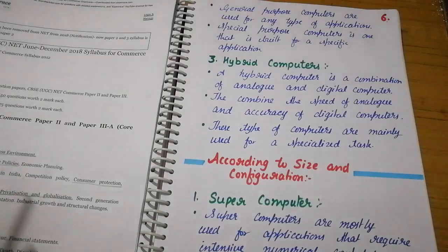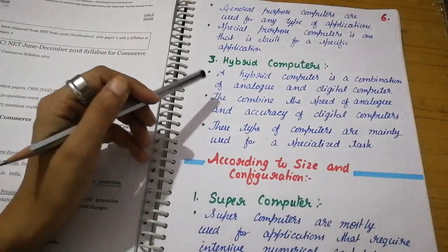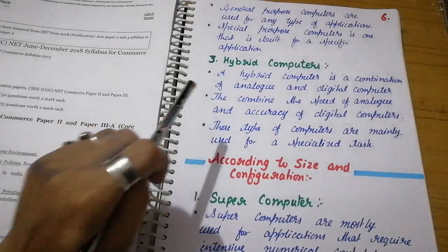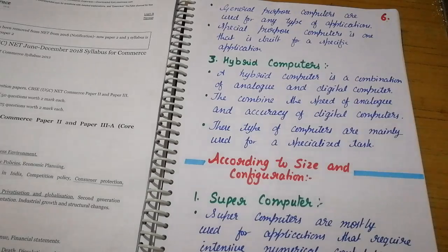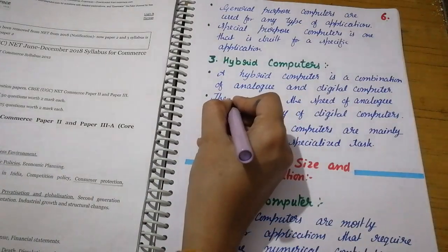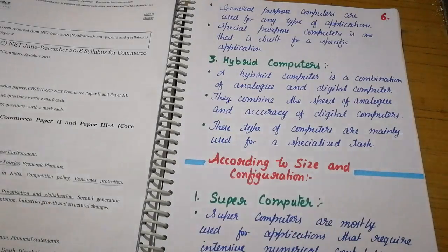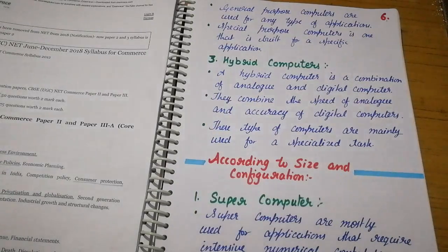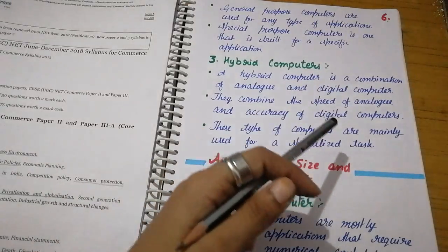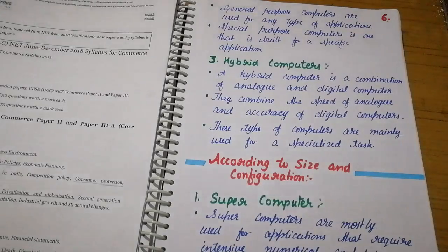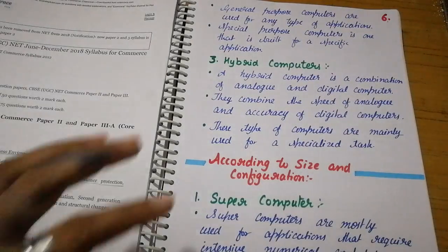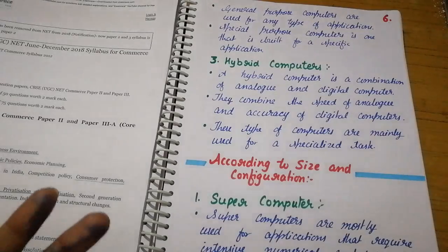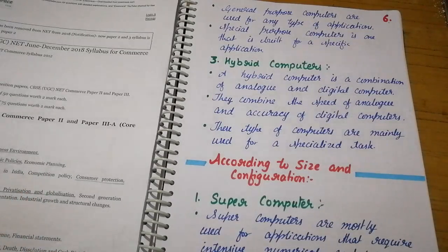Hybrid computer is a combination of analog and digital computers. They combine the speed of analog and accuracy of digital. We combine the best features of both. These types of computers are mainly used for specialized tasks. They are made for a particular type of task or specific purpose.